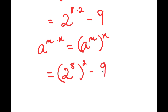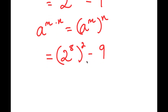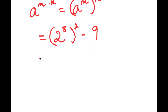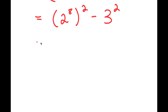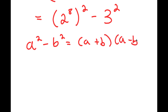And I have this minus 9. Now 9, I can rewrite this as 3 to the power of 2. So I get 2 to the power of 8 to the power of 2, minus 3 to the power of 2. Now, the reason I did all of this is because I can use the property a squared minus b squared is equal to a plus b times a minus b.